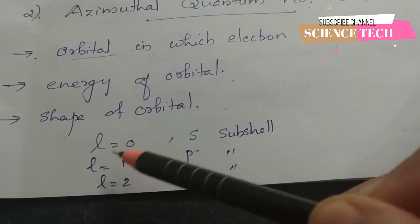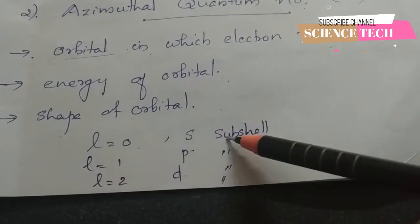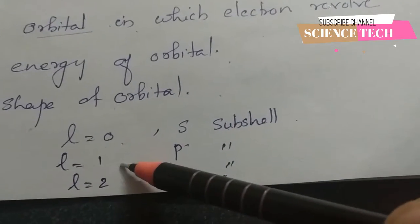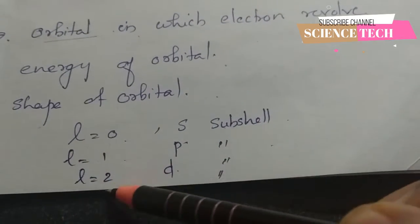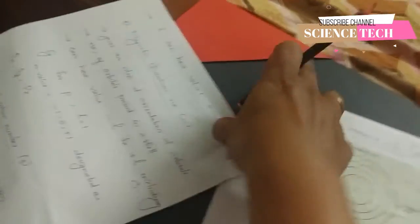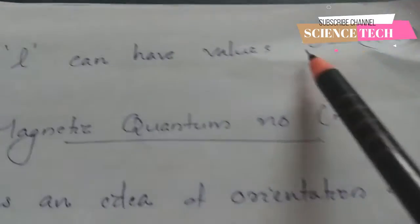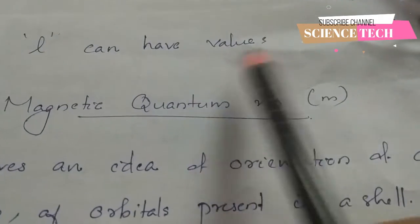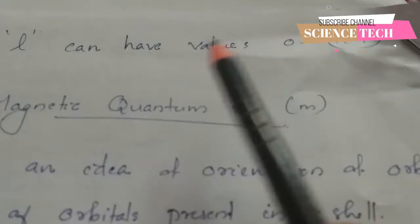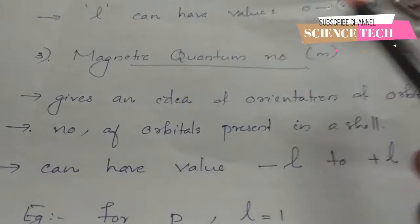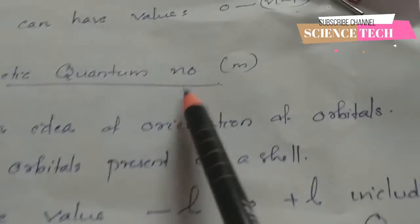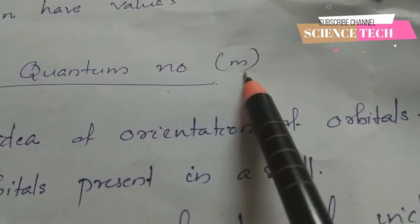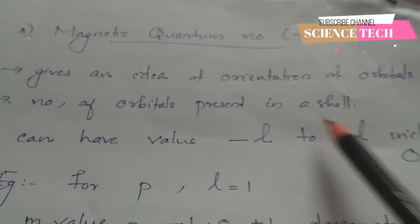For example, when l is equal to 0, it is the s orbital. When l is equal to 1, it is the p orbital. The value of l ranges from 0 to n minus 1. The azimuthal quantum number maximum value is n minus 1.